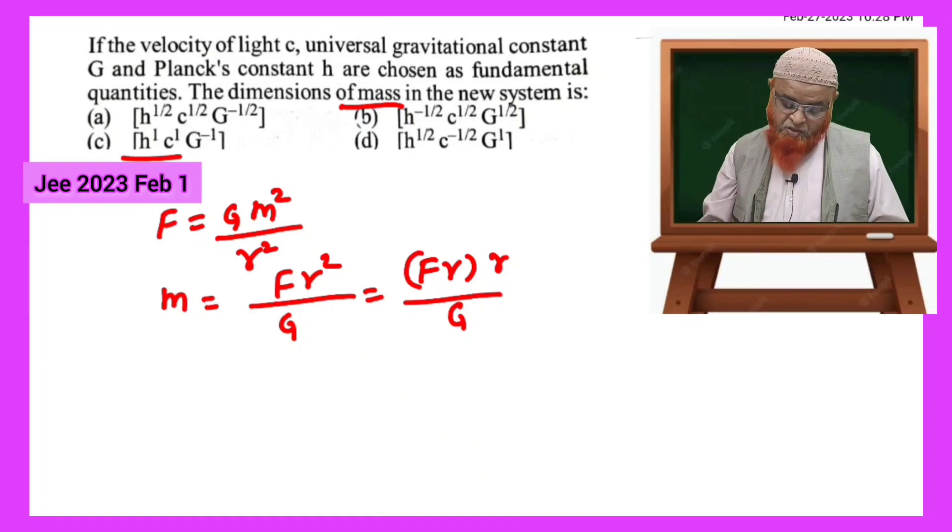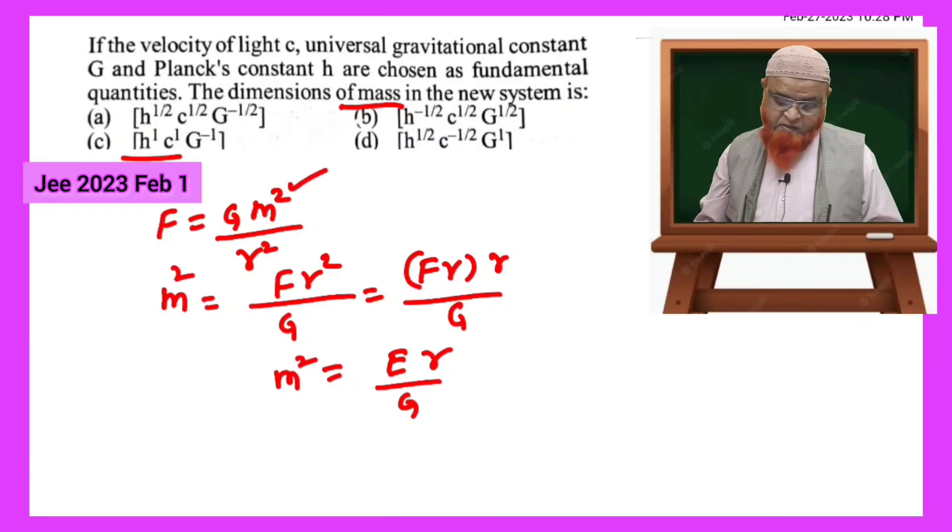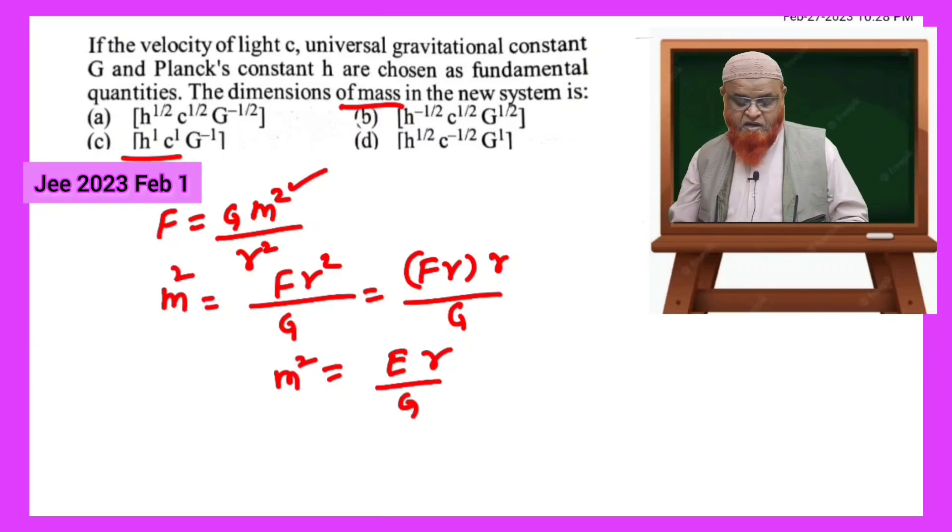So here force into displacement is nothing but energy into r by G, which is considered as mass here. But I have to take mass squared because mass squared is present here, so let us go ahead now.